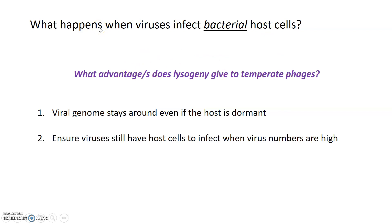The lysogenic cycle also ensures that host cells remain available for infection when viral numbers are high. If there were very many virions but very few host cells and all viruses entered the lytic cycle, they would infect and kill host cells faster than new ones could be generated, effectively destroying all of their hosts. So when viral numbers are higher than host cell numbers, viruses tend to enter the lysogenic cycle rather than the lytic cycle, ensuring some host cells survive for future multiplication.